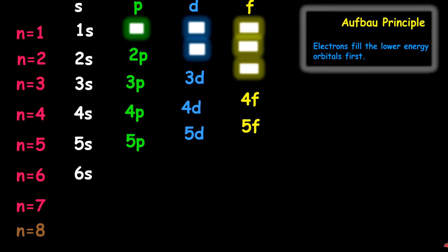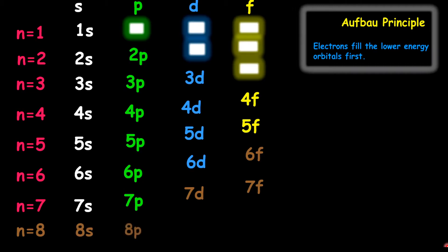For the sixth shell, we'll have 6S, 6P, 6D, and in theory a 6F. For our seventh shell, we'll have our 7S and our 7P, and our 7P will be our last reality orbital. Beyond that, they are just theoretical values. The lighter brown colors are the theoretical numbers used for demonstration purposes only, while the brighter colors are the ones that actually exist in reality.